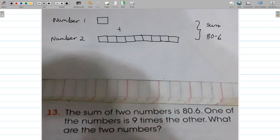All right, so we need to find the value of one of these portions if the total amount is 80.6, and we have the number of portions: one plus nine to give us ten. So we have ten portions and we need to find one portion.